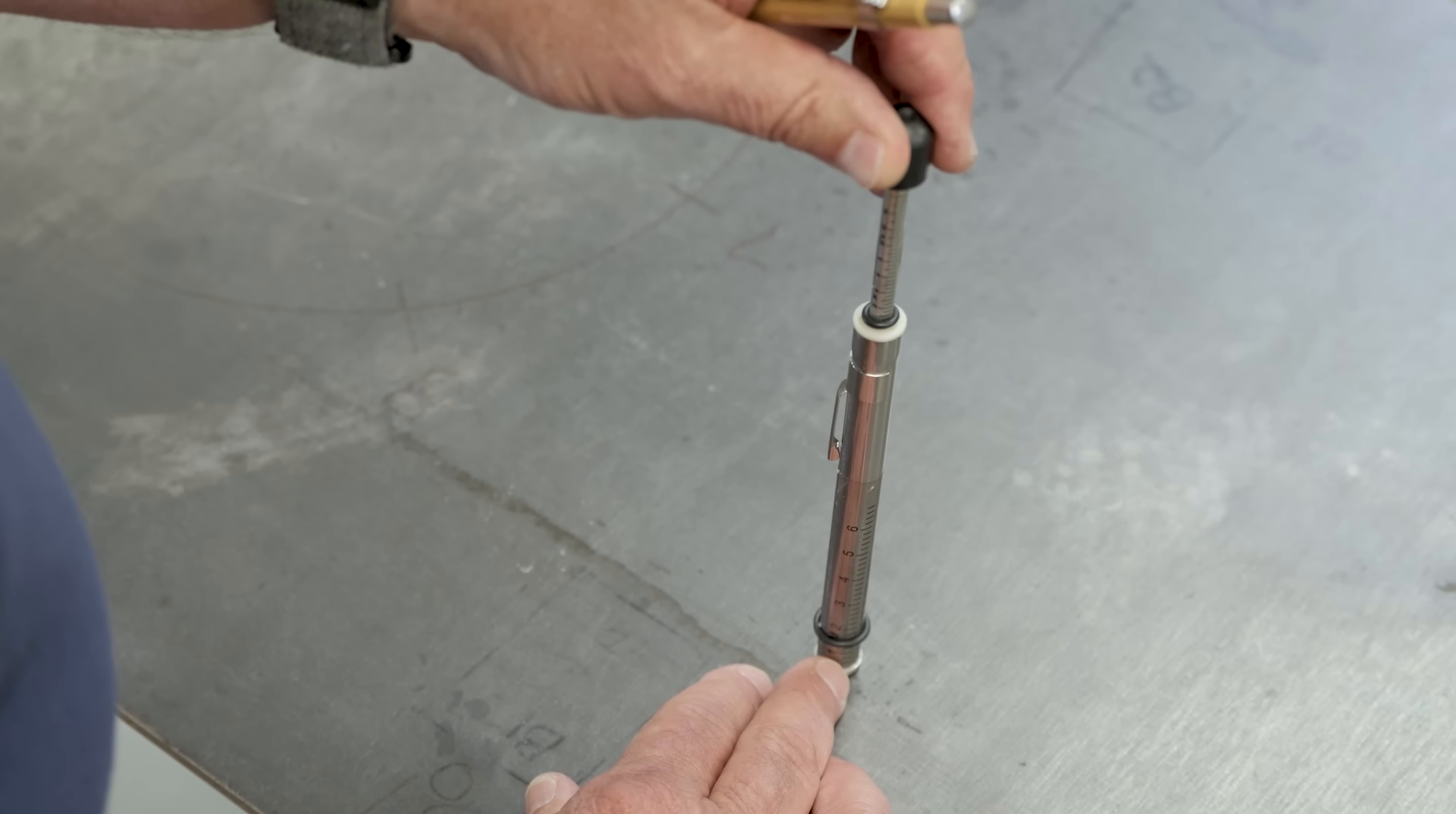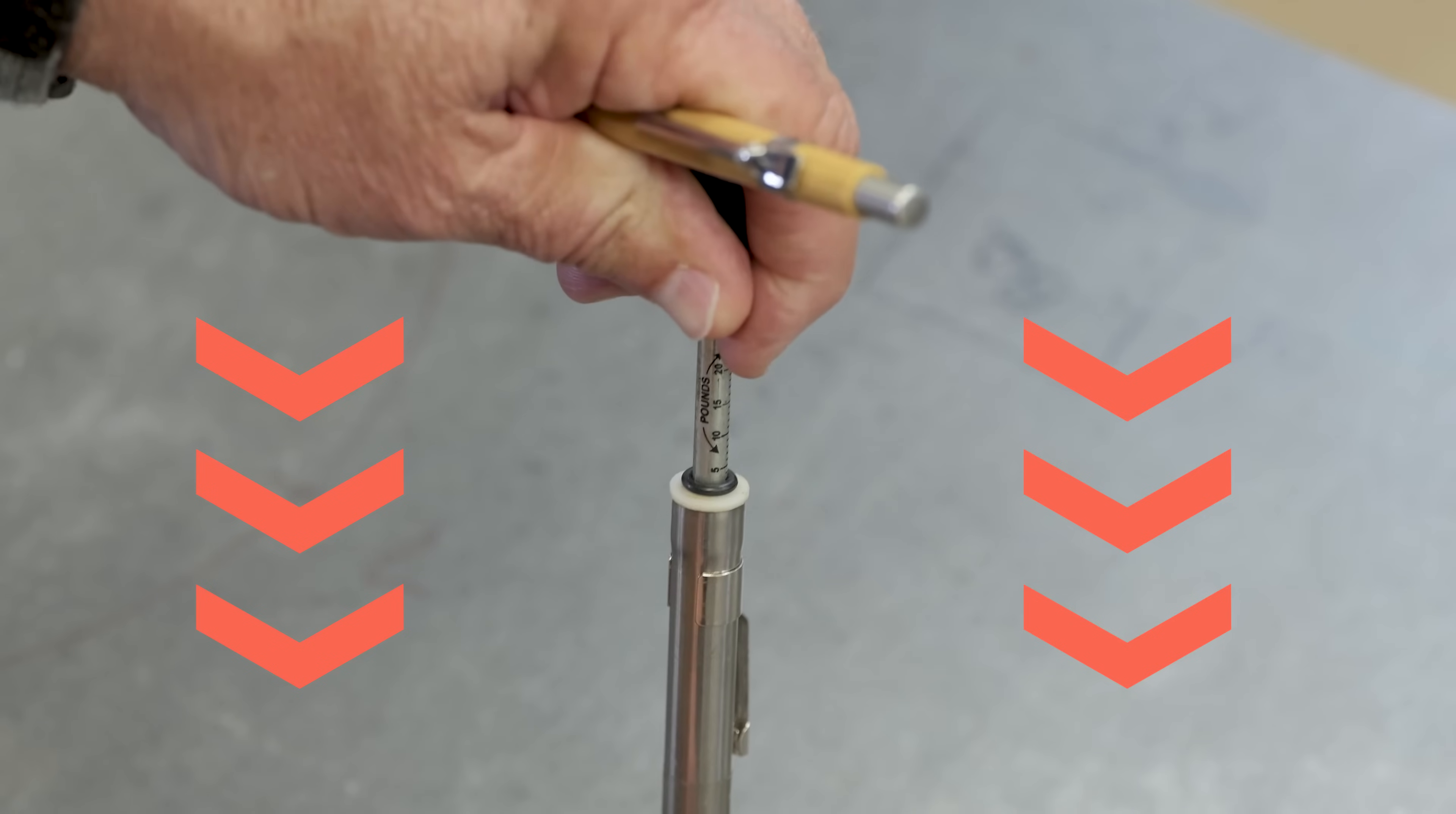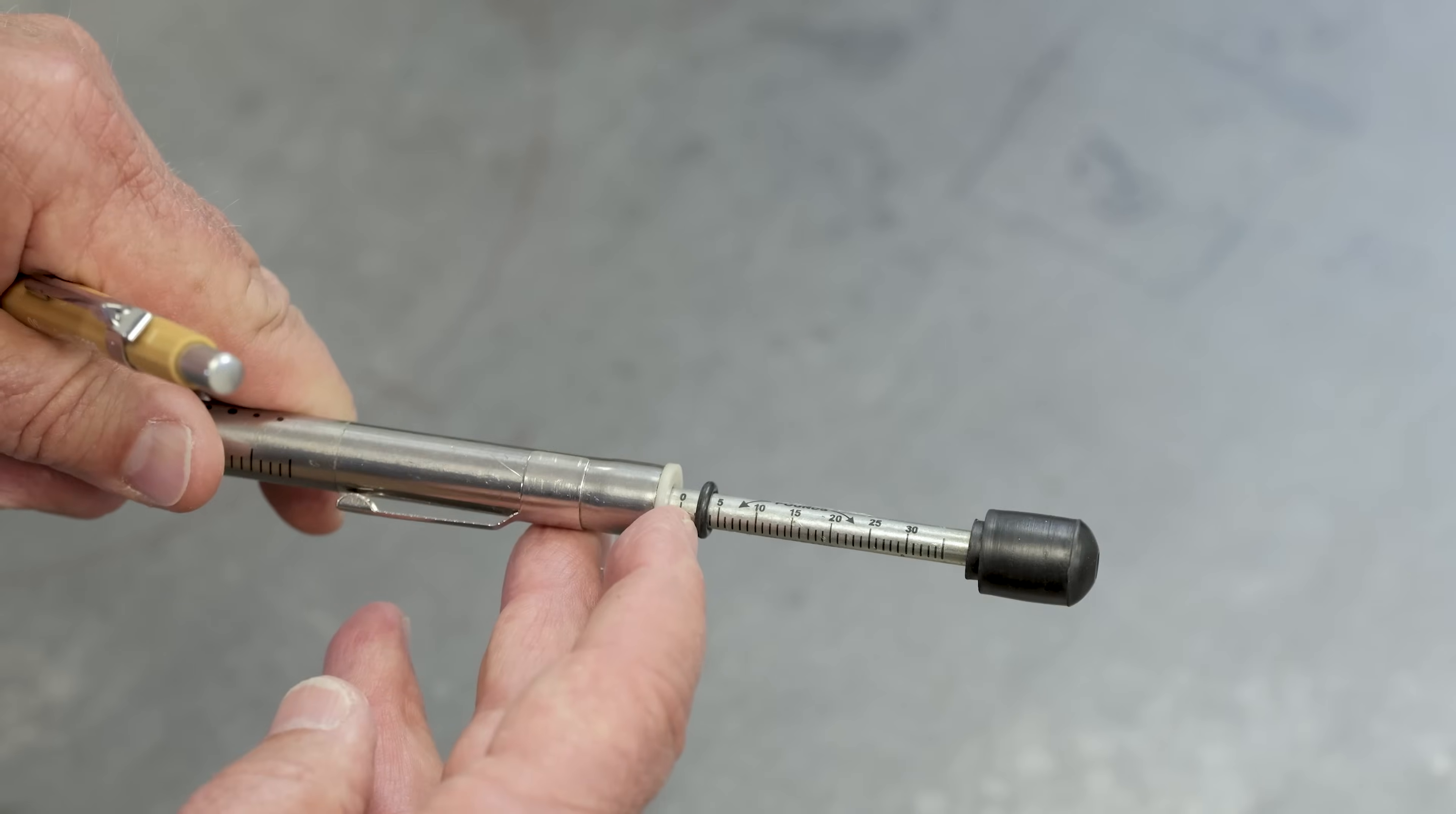So what I would do now to measure the deflection force, I would hold the rubber tip, put the point onto the belt, and push it until I get this deflection distance. And then I would just read the amount of pounds of force that I'm using to get the belt to deflect the proper distance.